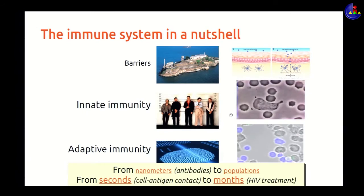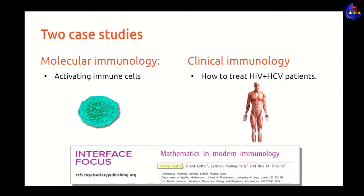The problem with the immune system is that it's not localized. When we talk about the circulatory system, we think of the bloodstream, heart, and blood vessels. But the immune system ranges from nanometers — the size of a receptor — to whole populations of individuals, like in smallpox epidemics. Let me focus on two examples: one at the molecular level on the surface of T cells, and another involving patients co-infected with AIDS and hepatitis C, to show how mathematics can throw light on these problems.